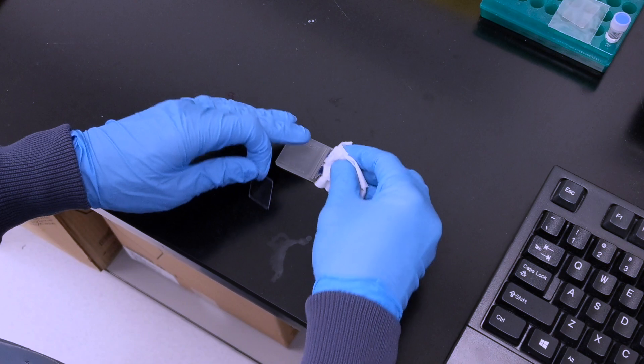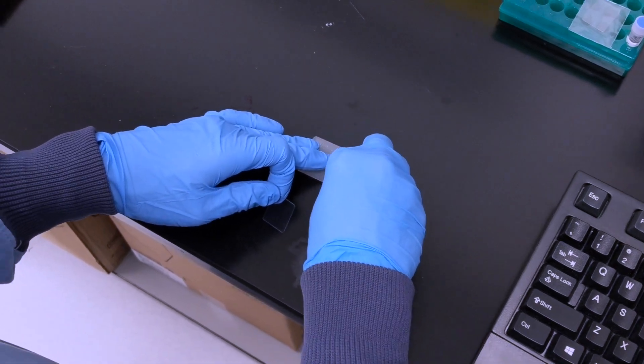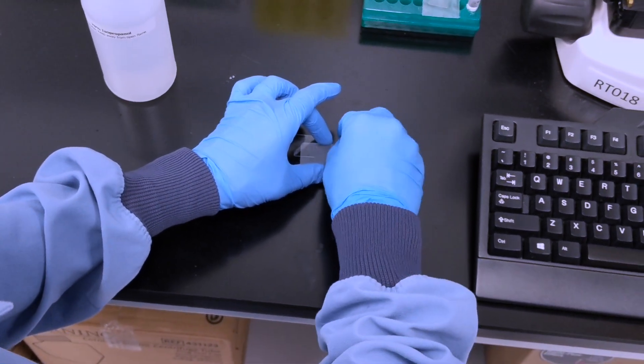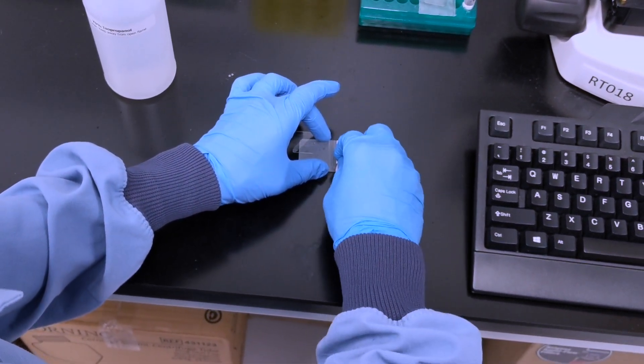If you are working with a reusable hemocytometer, it can be rinsed with water, further cleaned with a solution of 70% alcohol, and stored for future use.